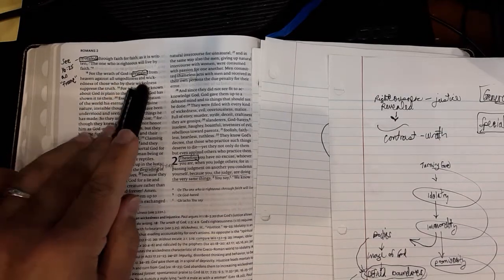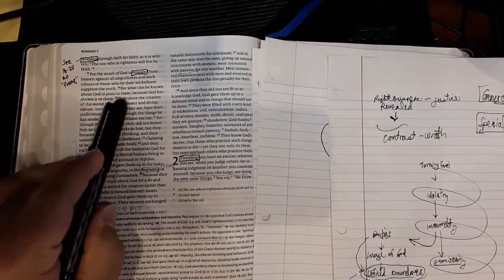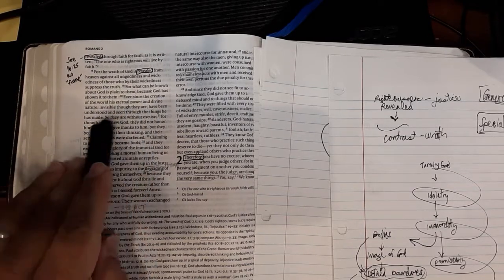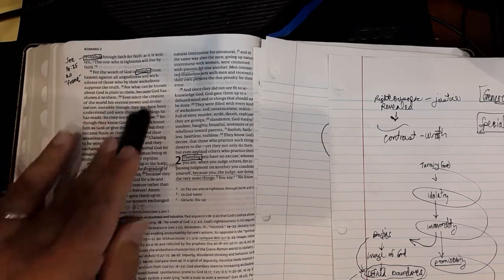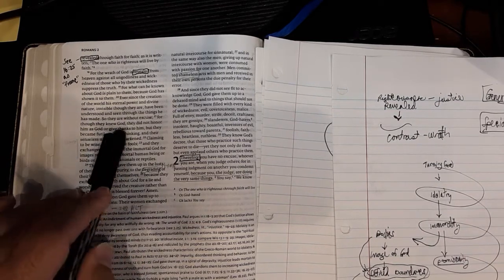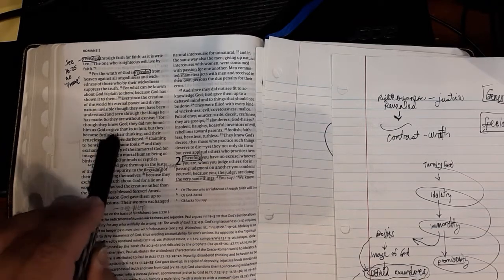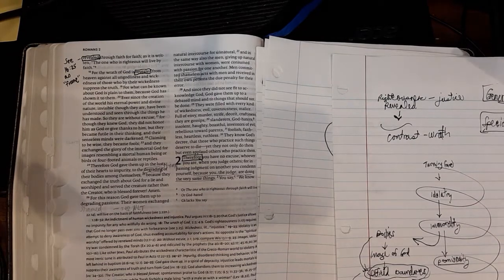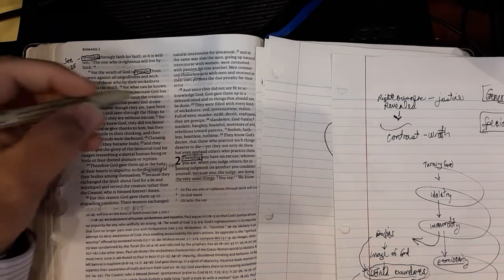So the wrath of God is revealed from heaven against all ungodliness and wickedness of those who by their wickedness suppress the truth. So he's already differentiating between us versus them. For what can be known about God is plain to them because God has shown it to them. For though they knew God, they did not honor him as God or give thanks to him. Here's your key word of understanding this passage. They did not honor him.